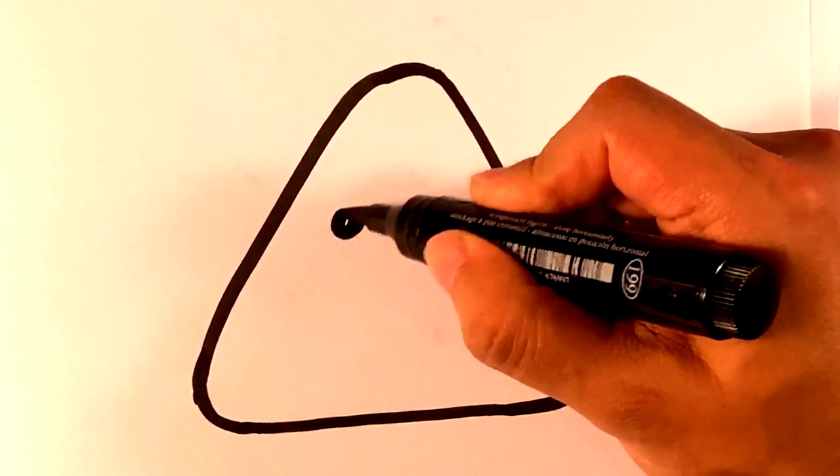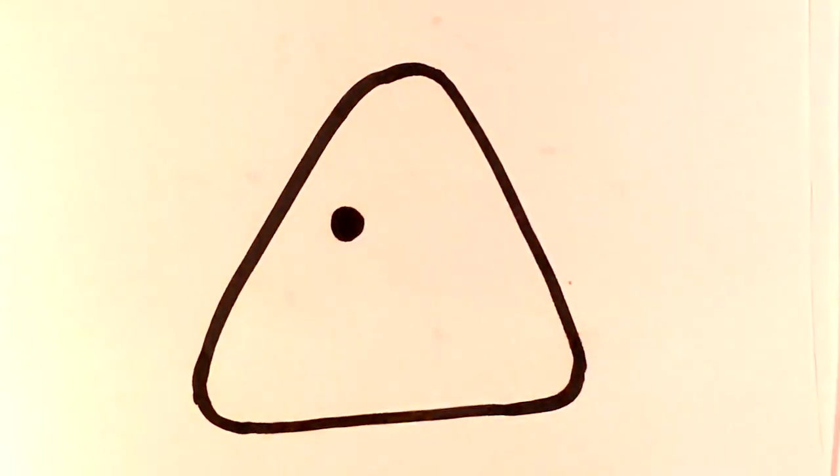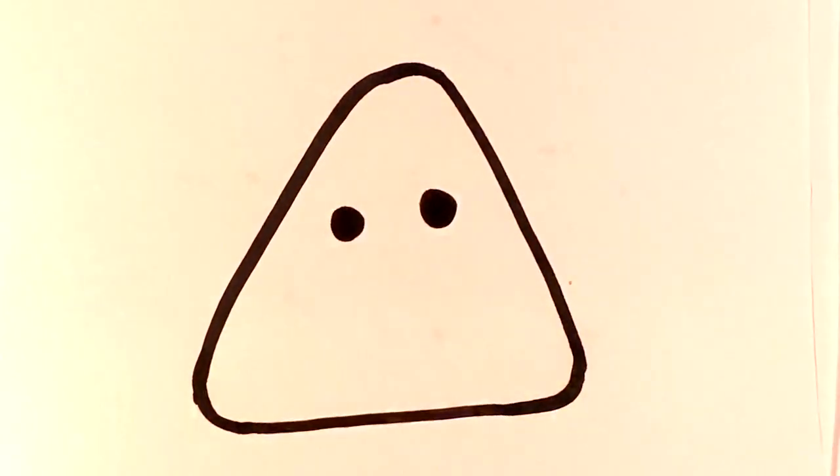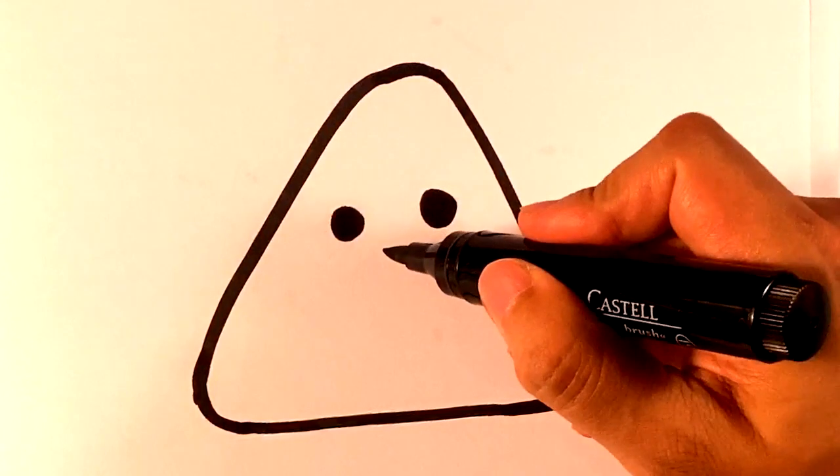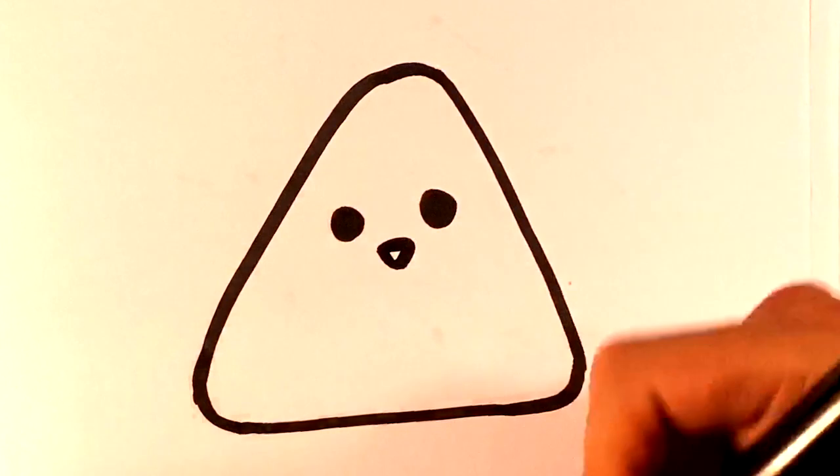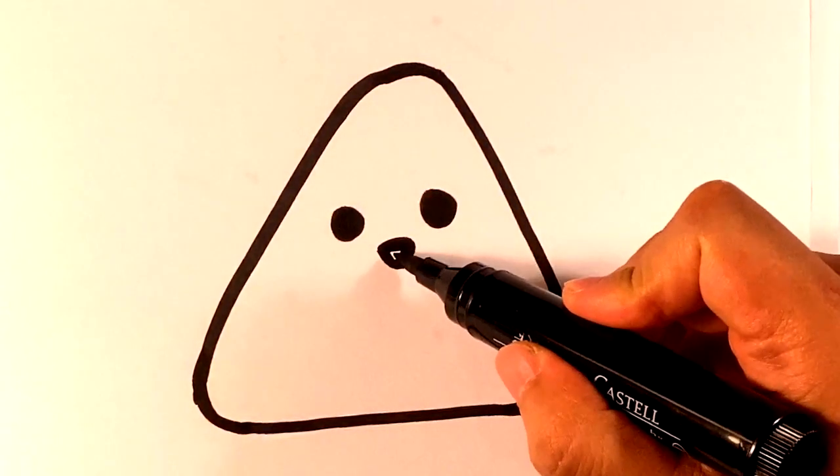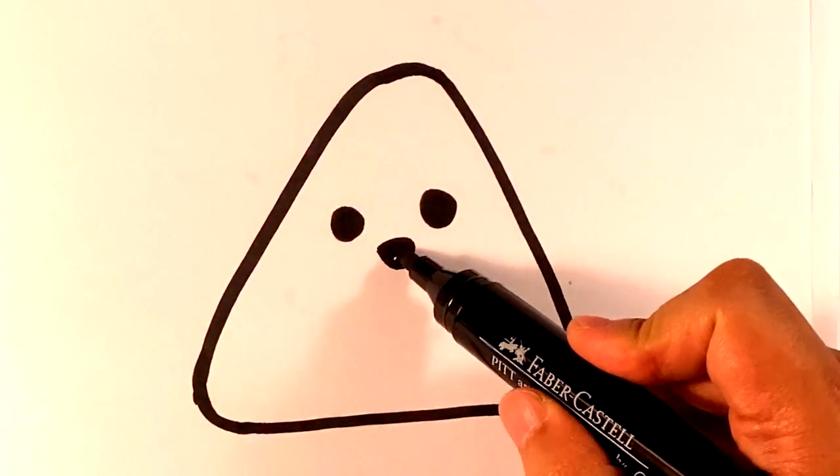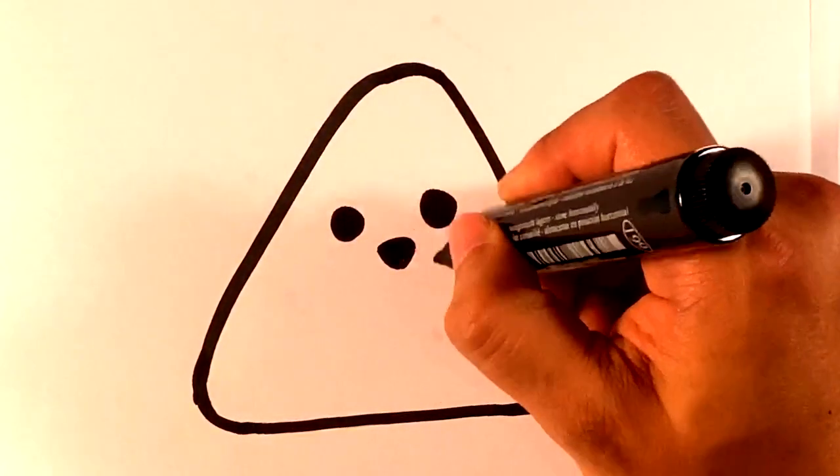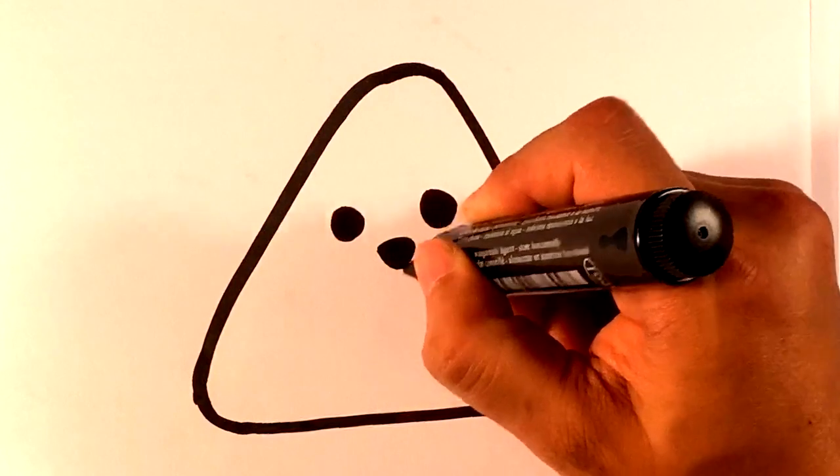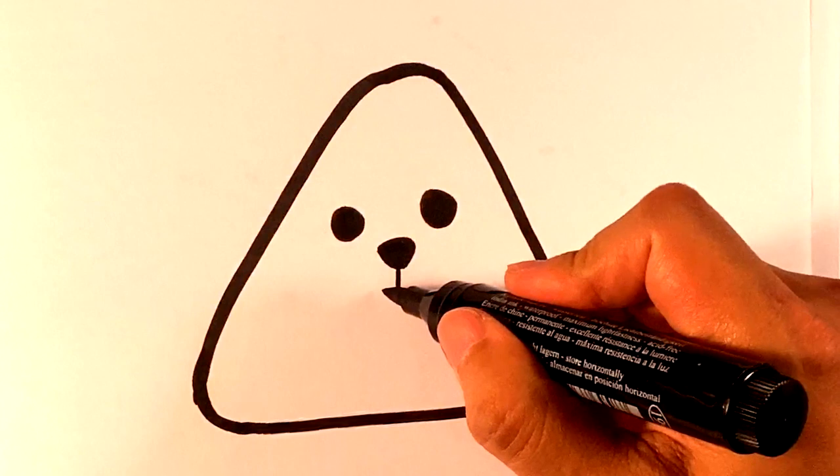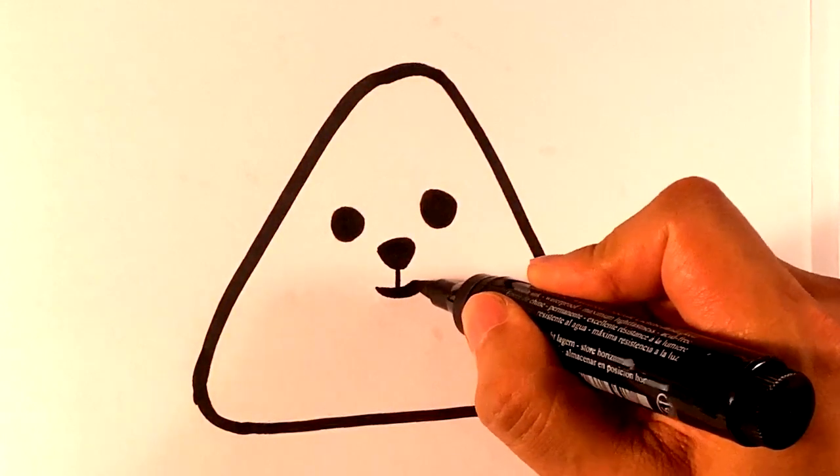So I'm going to draw a circle right there. Circle right there. I'm going to draw a very rounded kind of triangle right here. Like upside down triangle. Very rounded. Going to fill that in. Now what I'm going to do is I'm going to draw a straight line down. And I'm going to draw a little curve here because I want my teddy bear smiling.